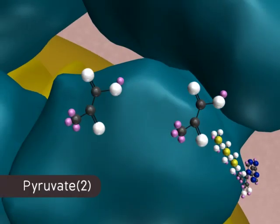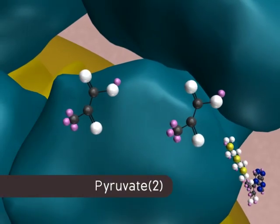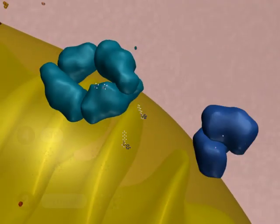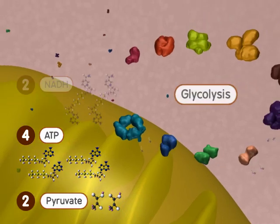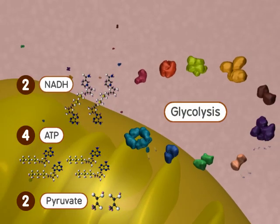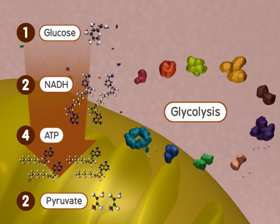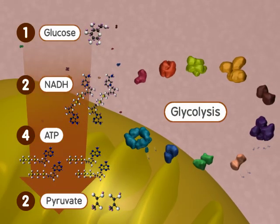At this point, 2 pyruvate molecules, 4 ATPs, and 2 NADHs are formed for each glucose that was broken down in glycolysis.